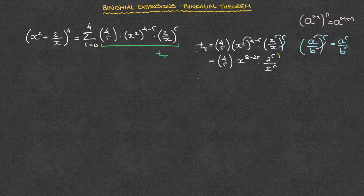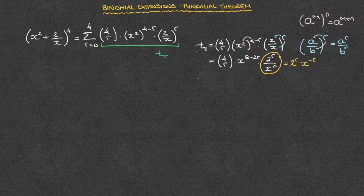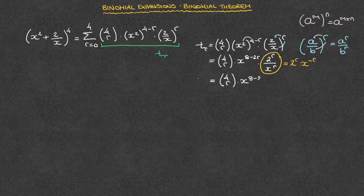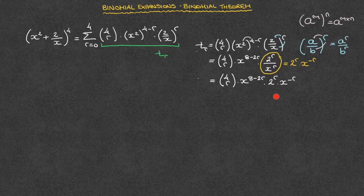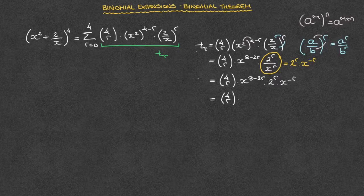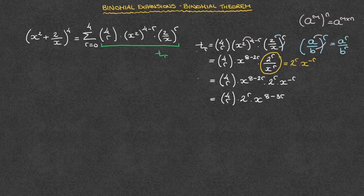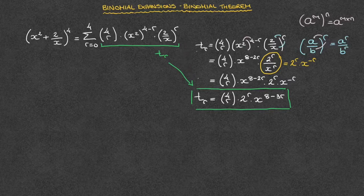The next thing worth pointing out is that 2 to the power of r over x to the power of r can be rewritten as 2 to the power of r times x raised to the power of negative r. In other words, this equals the binomial coefficient 4r times x to the power of 8 minus 2r times 2 to the power of r times x to the power of negative r. Finally, multiplying these two powers of x together — remember that we add their respective exponents — leads to: this equals the binomial coefficient 4r times 2 raised to the power of r times x raised to the power of 8 minus 3r. That's the general term of this expansion, and I'll go ahead and box that.